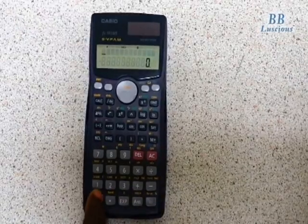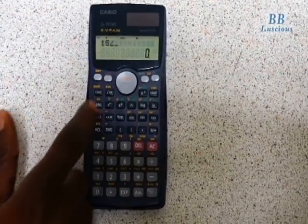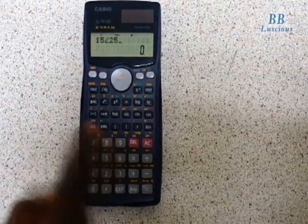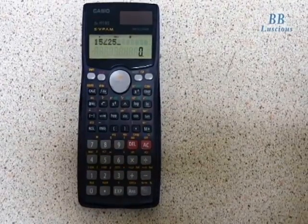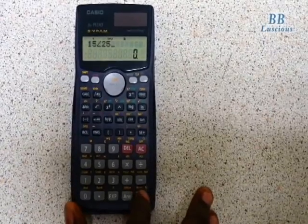If I want to find 15 angle 25 degrees and I want to calculate the real part and imaginary part, how do I do it? I press equals...